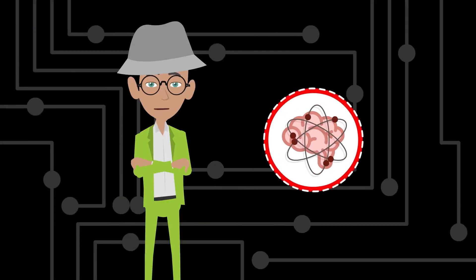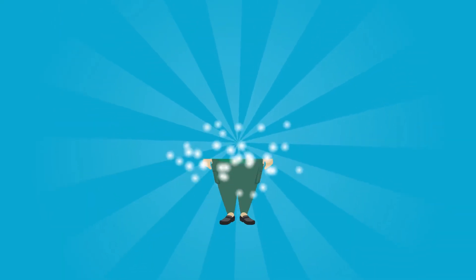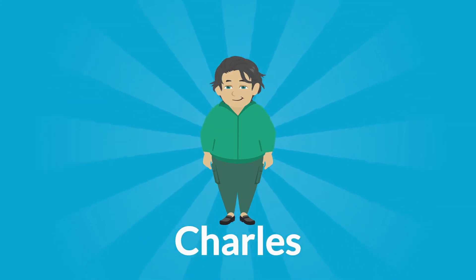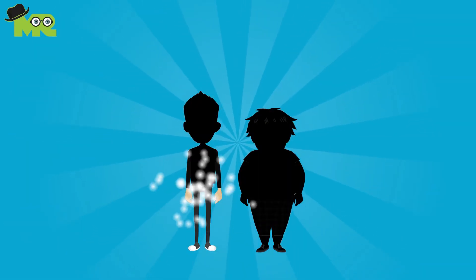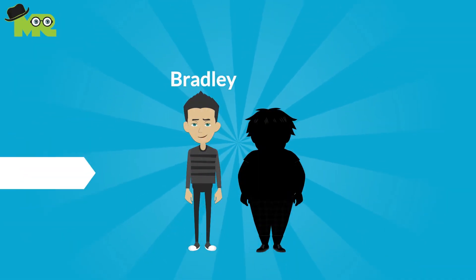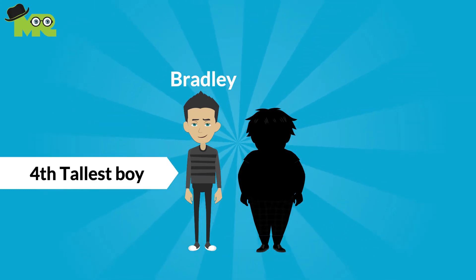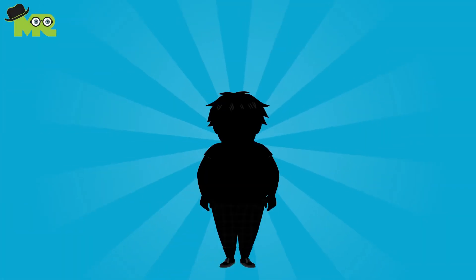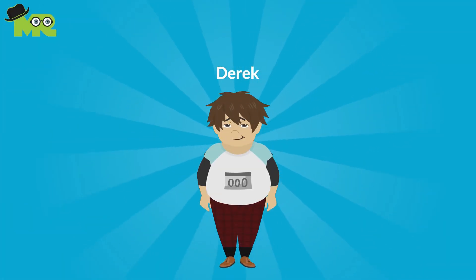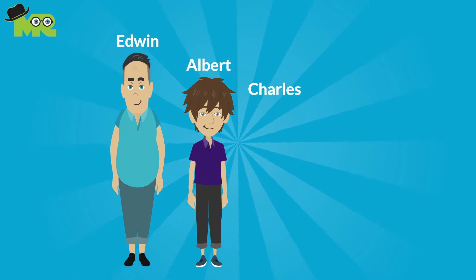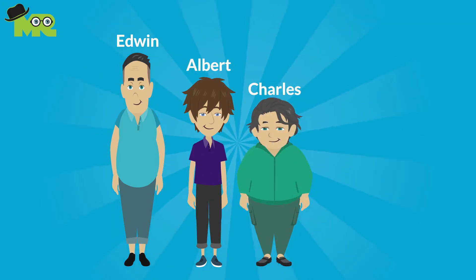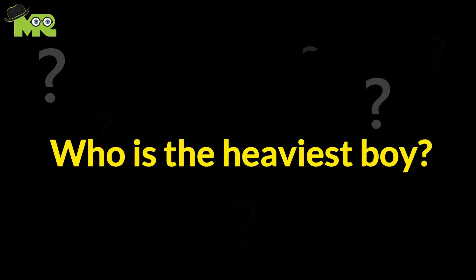Let's solve this mind bender. Charles is the heaviest boy — how? Albert is the second tallest boy. There's only one boy shorter than Bradley, so Bradley is the fourth tallest. Derek is the shortest and second heaviest. Albert is shorter than Edwin, so the third tallest boy is Charles, who is the heaviest boy.